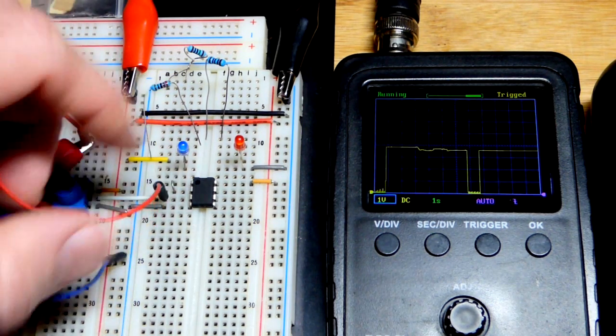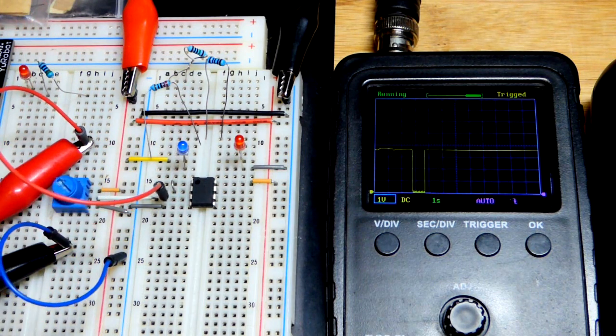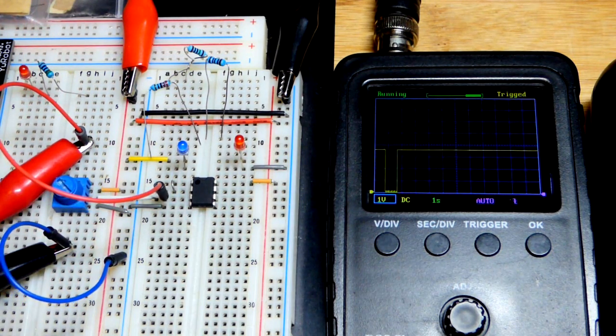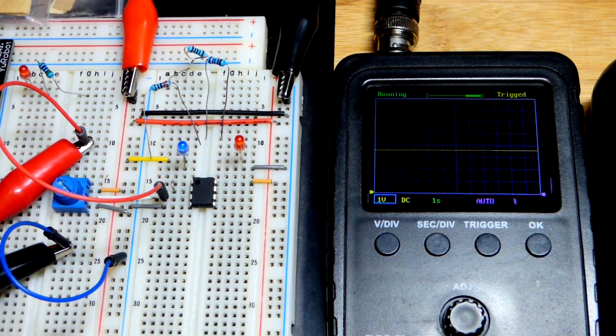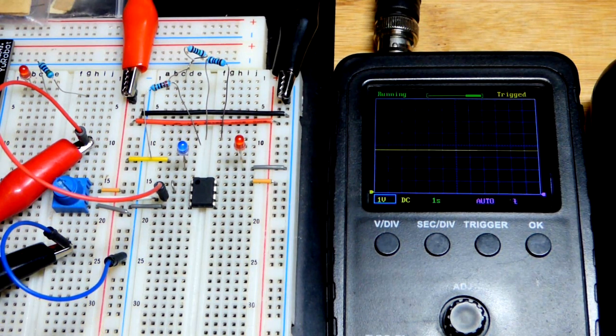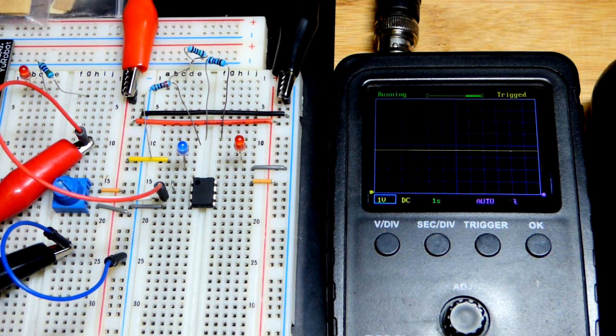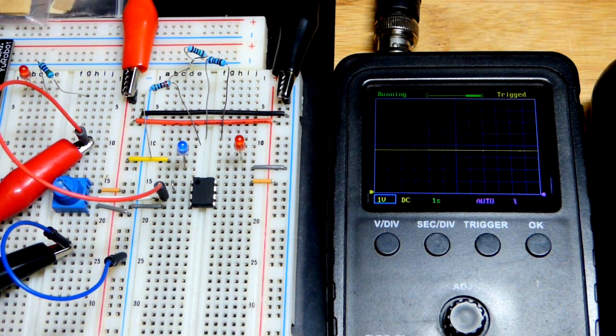So the output has a voltage limit. Can't get all the way to the positive supply no matter what. And it can only go to ground if it doesn't really need to pass any current. That's important to understand why your circuits are doing what they're doing. And you may need a different op amp for your project that can handle whatever your output needs.